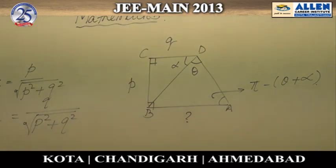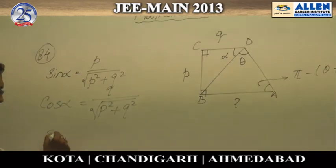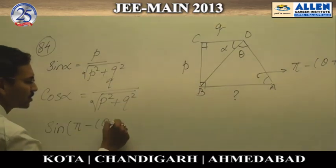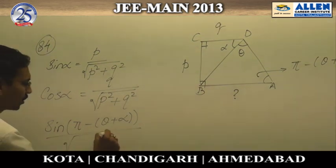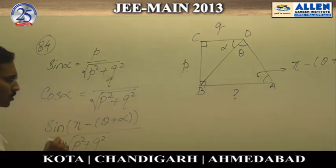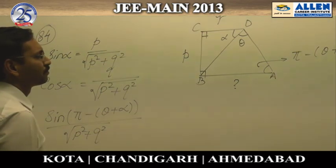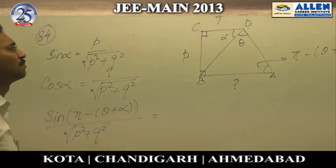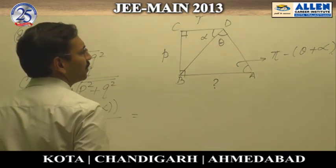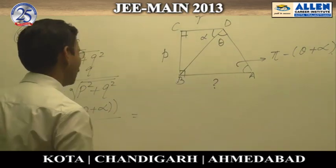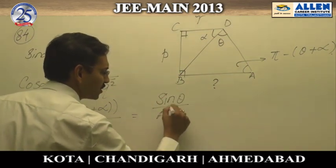We will now apply the sine rule. Applying the sine rule: sin of angle A, which is pi minus (theta plus alpha), divided by the opposite side BD — which is square root of p squared plus q squared — equals sin theta divided by AB, where AB is the unknown side we have to calculate.